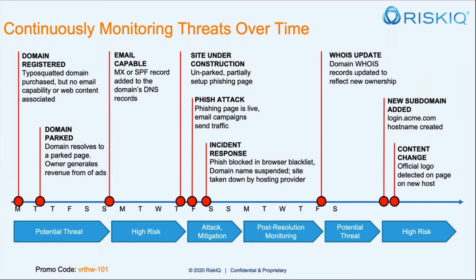Once you take it down or stop it, it's like whack-a-mole — it can happen again. So we can continue to monitor it. With the infrastructure chaining we do, if it gets someplace else, we're able to figure out what's happening and see it and stop it again very quickly before it can take effect. Once we understand your organization, anything that looks like your organization or refers to things from your organization is suspect. We have a pattern for that — it's called the minhash algorithm. We hash the full document object model and compare it with every other document object model in the world on all the domains.